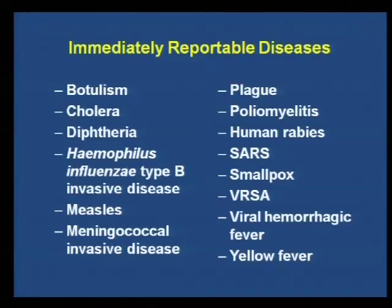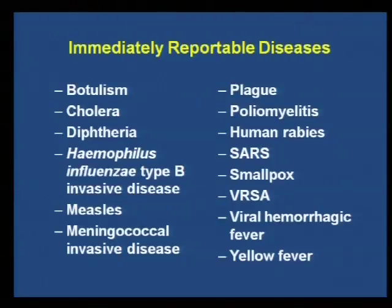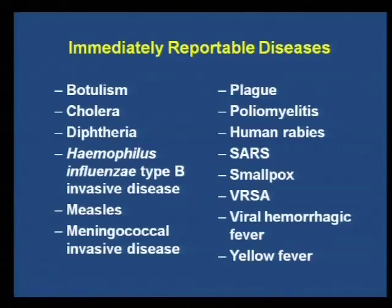Keep in mind your immediately reportable diseases. Some of these you might not know until after the lab result comes in, and that's obviously understandable. But some of these, if you suspect them clinically, we'd like you to call us right away. The main one we see in Iowa is measles — we don't have a lot of cases, but there really shouldn't be measles in Iowa, so we always want to know where the person got it from. We usually want to look into travel history. So if you see any of these, give us a call.